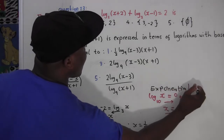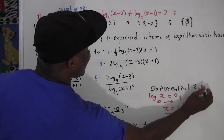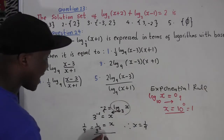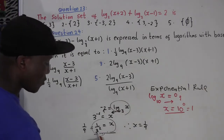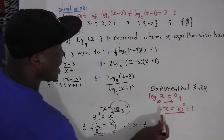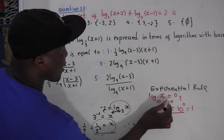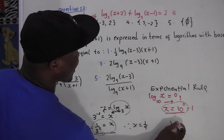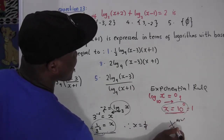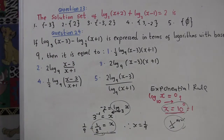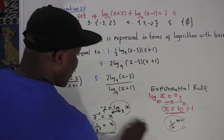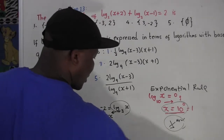You use the exponential rule because the expression starts as a logarithm but ends up as an exponential — the base is raised to a power. That's what we call the exponential rule. We're going to use the same approach for the next question.